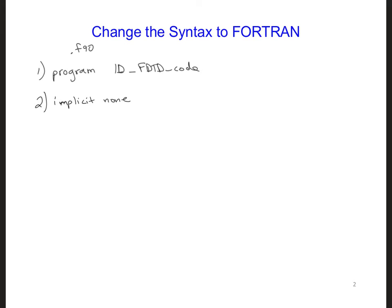Third, because we added 'implicit none', we need to specifically declare all the variables and say whether each one is a real number or an integer. All of these declarations need to be done at the very beginning of the code, right after 'implicit none'. For example, on the next lines you might write 'real' and delta will be a real number, dt, c, and then for integers you can write 'integer', nmax is an integer, imax, and i when you're recycling through the i values.